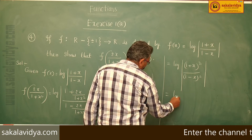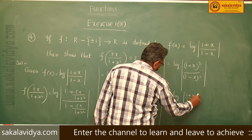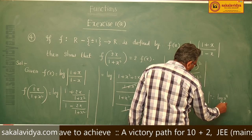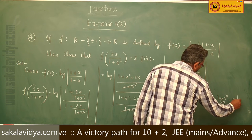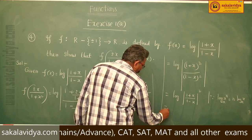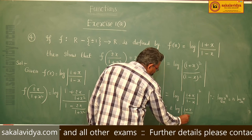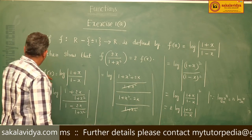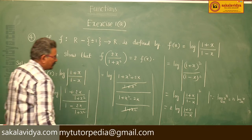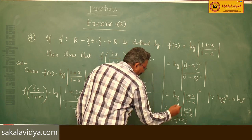This can be rewritten as log|(1 + x)² / (1 - x)²|, which equals log|(1 + x)/(1 - x)|². Using the power rule — log(xⁿ) = n·log(x) — this becomes 2·log|(1 + x)/(1 - x)|. Since log|(1 + x)/(1 - x)| = f(x), this equals 2·f(x). Hence proved.